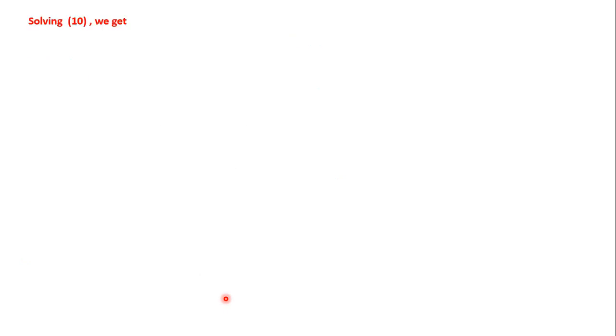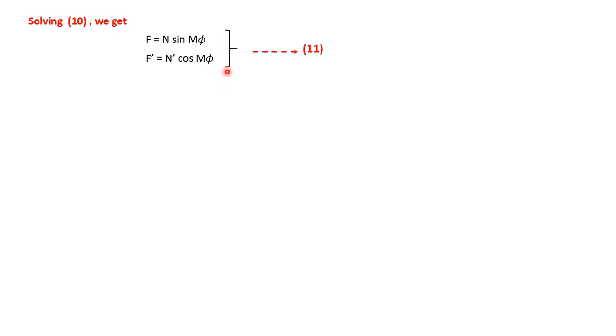Solving this differential equation, we get different solutions. One real solution is f = N sin mφ, and the other is f′ = N′ cos mφ. These contain no complex number and are the real set of solutions, known as circular harmonics. The next solution is f″ = A e^(±imφ), which contains the imaginary number i and is therefore an imaginary solution.